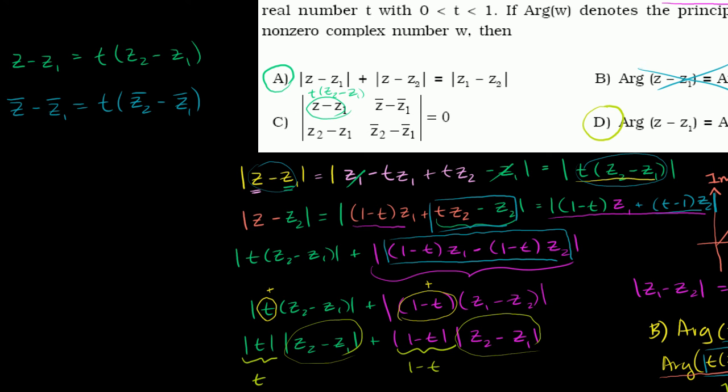Now with this said, this determinant becomes pretty simple. This becomes t times z2 minus z1. This becomes t times the conjugate of z2 minus z1. This down here is z2 minus z1. And then this over here is the conjugate of z2 minus z1.